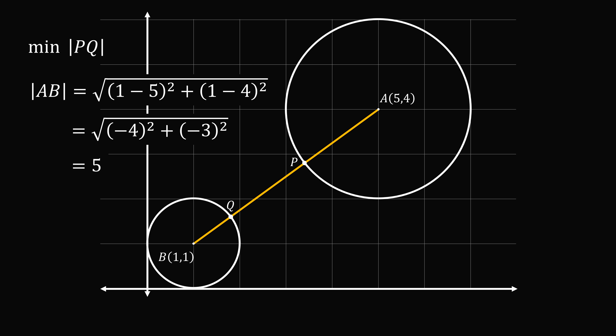AB has a length of 5. The radius of circle A is 2 and the radius of circle B is 1. Subtracting both radii from 5 gives us 2, and that is the length of PQ — the shortest distance between the two circles is 2. That solves part 1.